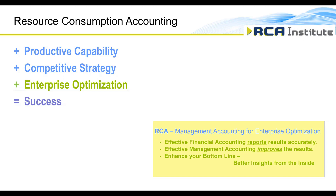RCA is the managerial costing approach focused on creating information for your enterprise optimization decisions. A financial accounting system reports historical results accurately, but effective managerial costing is needed to create the forward-looking information to improve tomorrow's results. To enhance your bottom line, you need to ensure that every manager and employee has the information to make correct decisions. Value is created inside your organization well before any capital market or investor decisions are made.